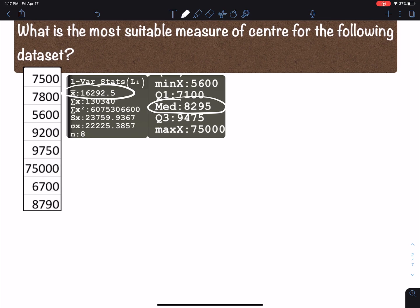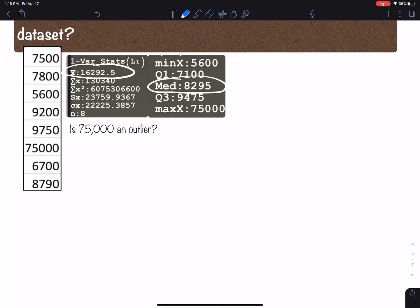Now technically we should check and see if 75,000 is an outlier. We're going to have to use the interquartile range in order to answer that question. Interquartile range is Q3 minus Q1, which are right here. Q3 and Q1 are right there. So 9475 minus 7100 is 2375.